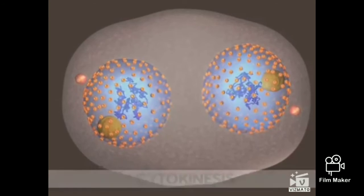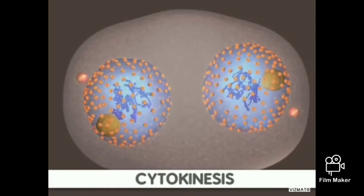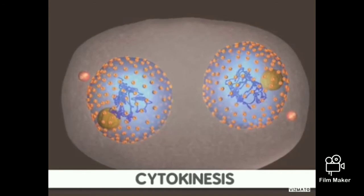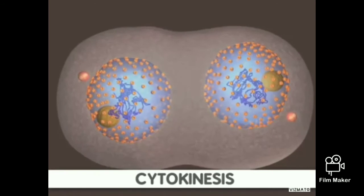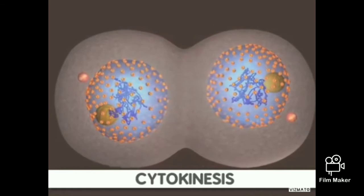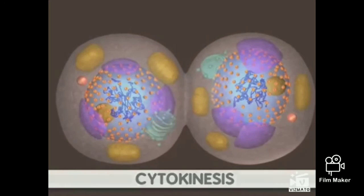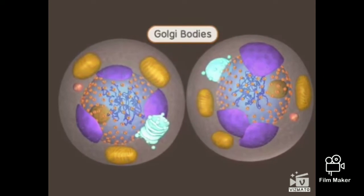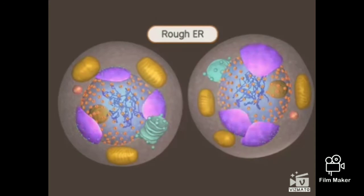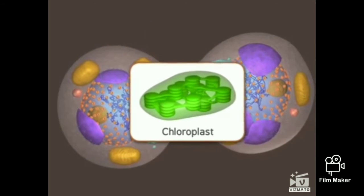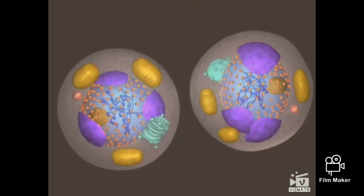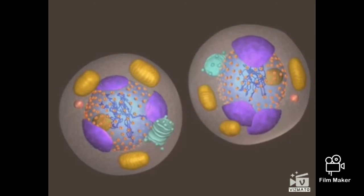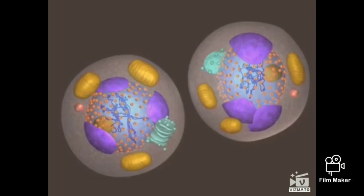Following mitosis, the cell undergoes a process called cytokinesis. First, the cell is compressed by a contractile ring that divides the cell into nearly equal halves. By now, the organelles in the cell have been replicated and are divided between the two halves of the cell. This includes mitochondria, Golgi bodies, and the rough ER. Plant cells also have chloroplasts. Once split, the two new cells are fully in the G1 stage of interphase and ready again to begin their growth.